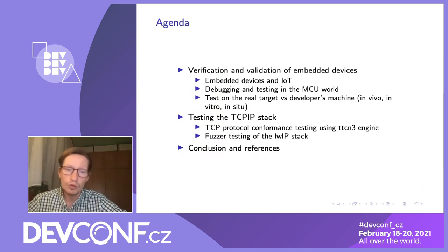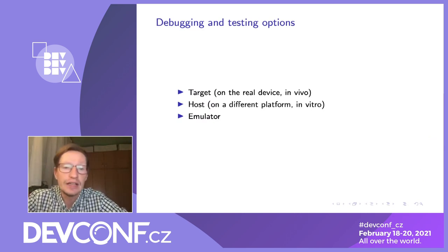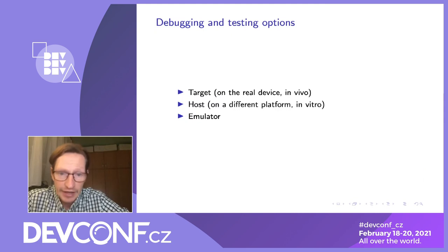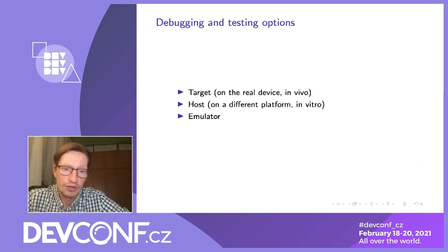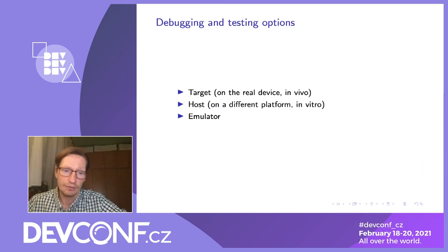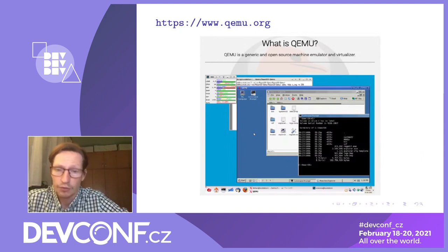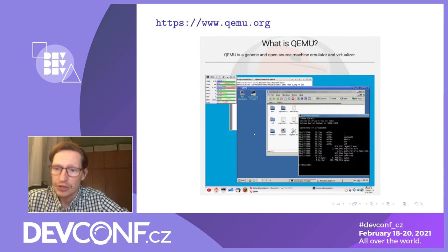Here are the options we typically use for testing, debugging, analyzing, reproducing issues, regression, CI — everything related to development on embedded systems. We can test on the real device, or recompile what we test to a different platform and run it on the developer's machine. We can also do something in between and use an emulator — a computer program that emulates the target platform. For the ESP platform, we use QEMU, an open source emulator and virtualizer widely used in other projects, where we run the target platform as a virtual machine on the developer's PC.